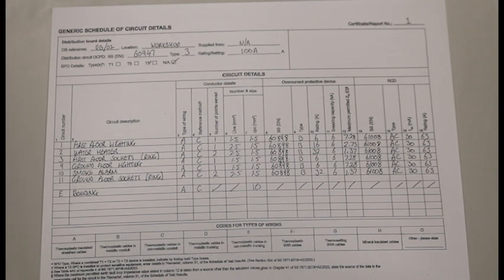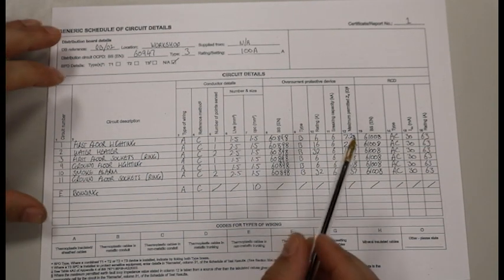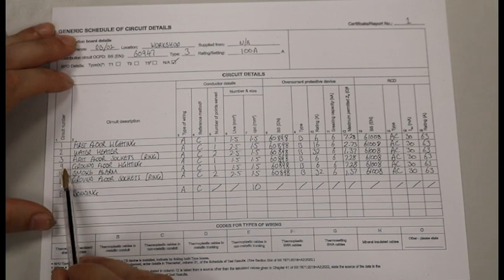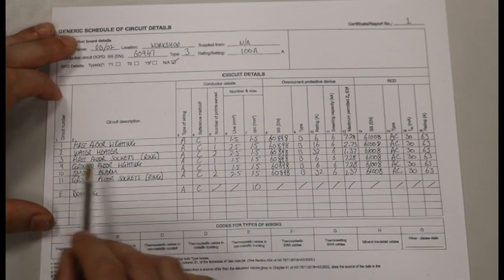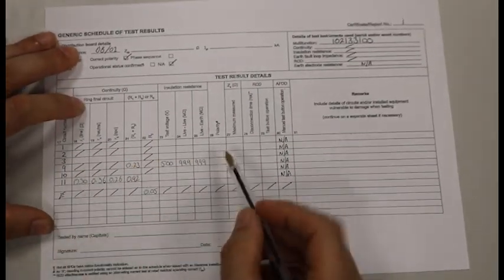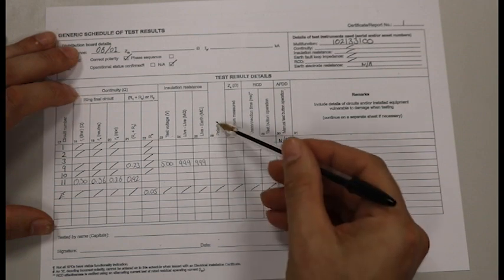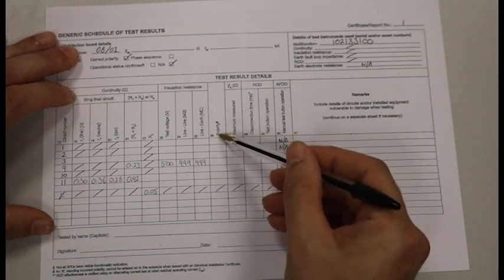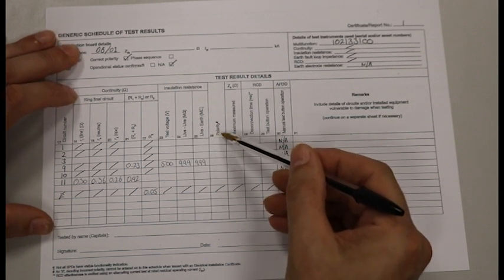Looking at the schedule of the test results for our polarity test, we were testing our ground floor lighting circuit which was circuit number 9. If we turn the page, we have circuit number 9, we go along to column 26 and it says polarity. So we checked polarity test A, B and C.